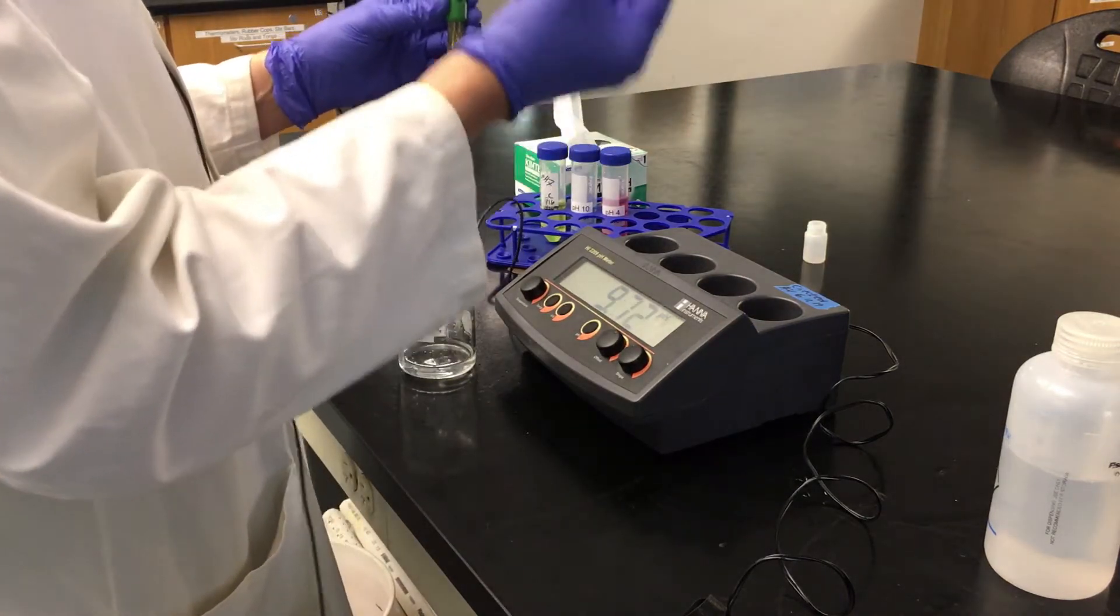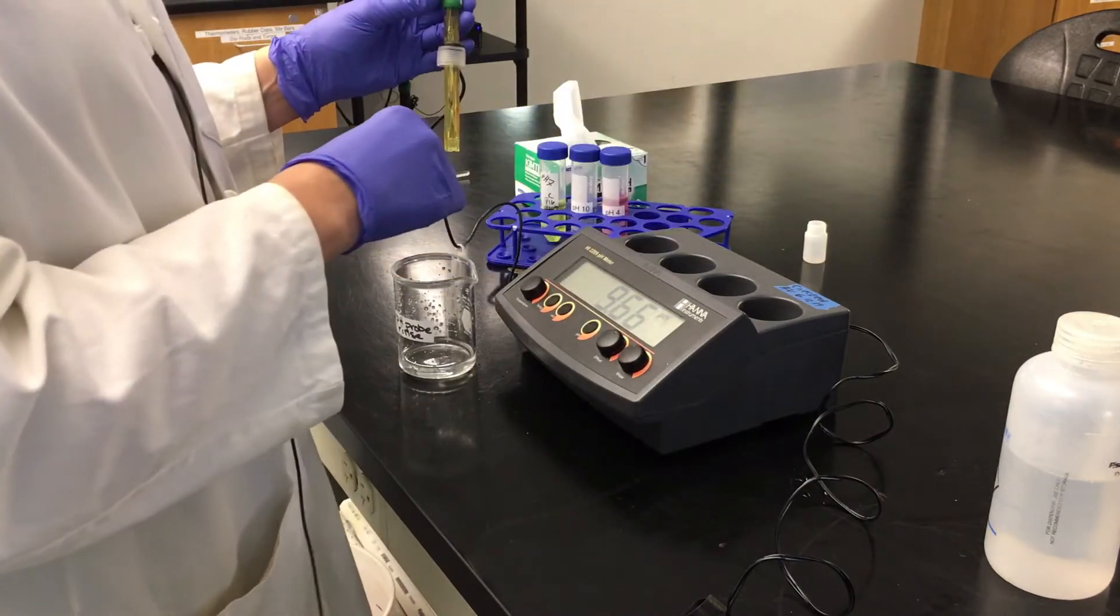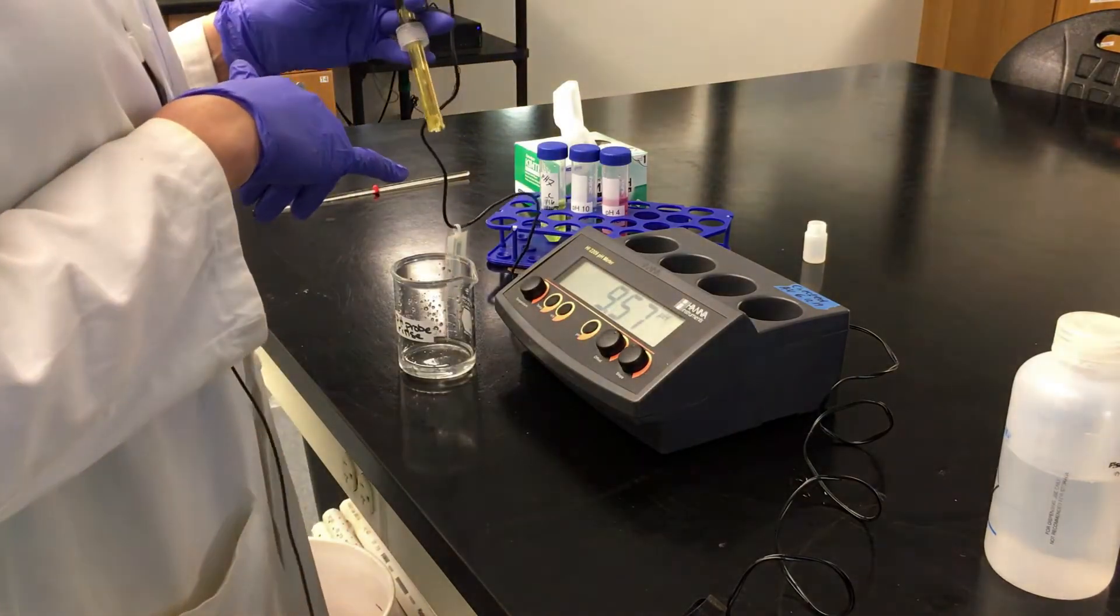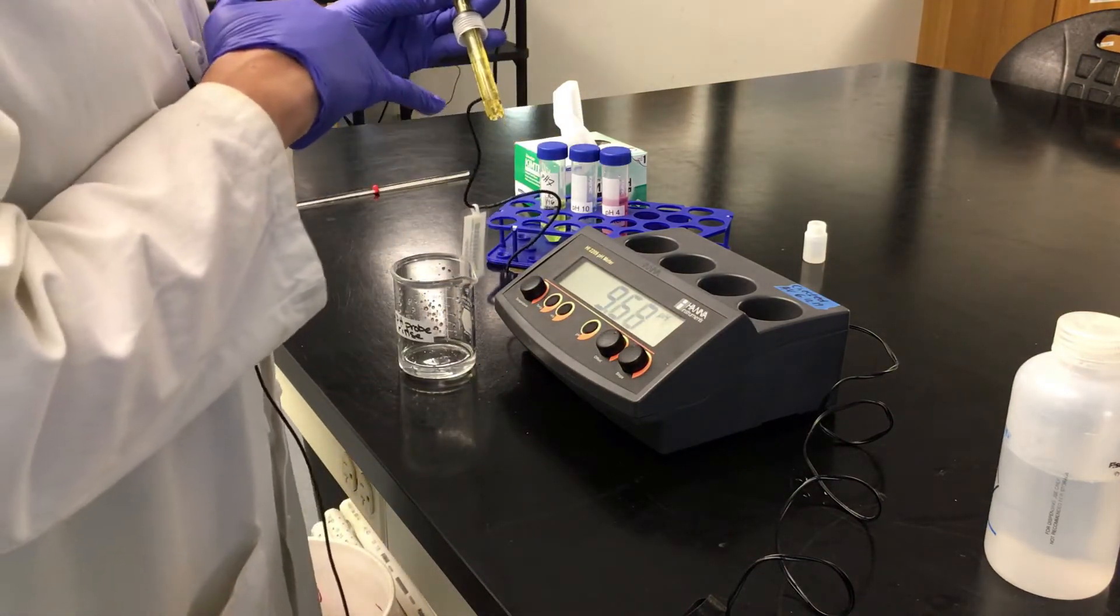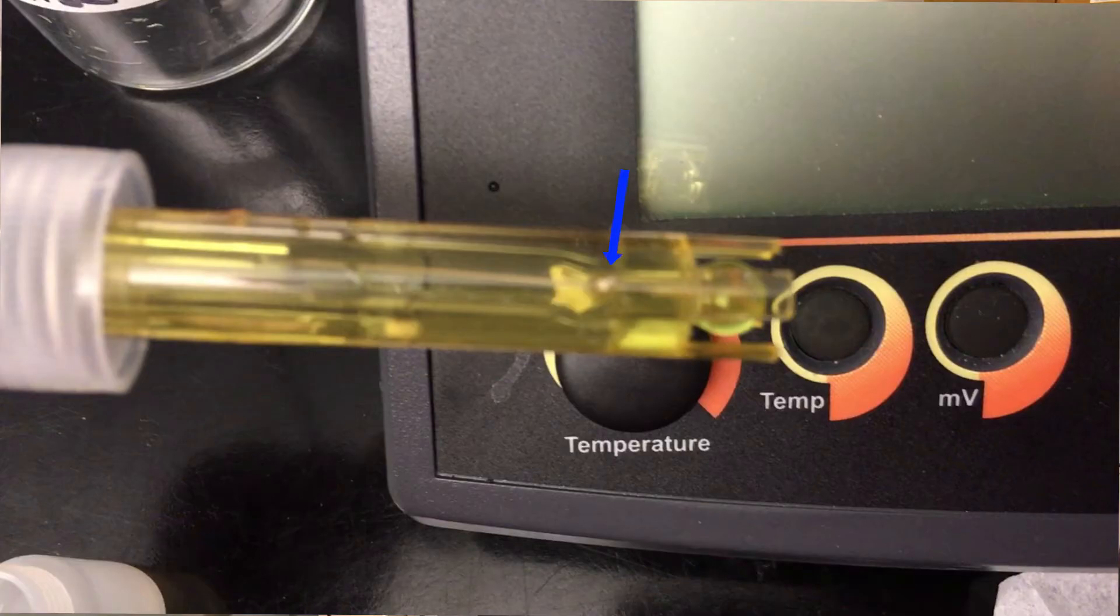Okay, so you're going to remove the cover there, or the cap. It just unscrews and set it aside. You do not want to lose that. And then make sure that any time you're taking a measurement, you want to make sure that this reference junction, there's like a little dot right down here, is completely submerged in the solution that you're reading.